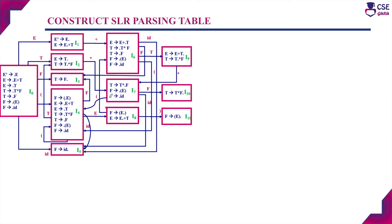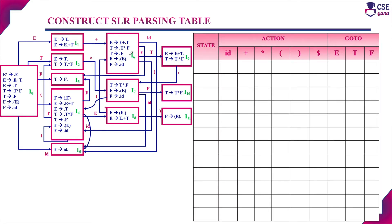This is the LR(0) automaton. How to construct the LR(0) automaton has already been discussed in our previous video — a link is provided in the description for your reference. With the help of these LR(0) items we will construct the SLR parsing table. The SLR parsing table consists of states, an action part, and a go-to part.